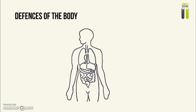The body has several defenses in order to prevent getting sick, though note that these are not all of the body's defenses — just some that you need to know for the syllabus. First, we have the mechanical barriers, which include the nose hair and your skin. Nose hair prevents pathogens and other things from entering your body by trapping them, and your skin is a very protective, waterproof layer.